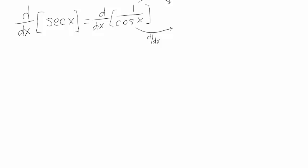Now this top function is a constant function, it's just 1. It never changes, so its rate of change is 0. This bottom function, cosine x, we memorized that this is equal to minus sine x.